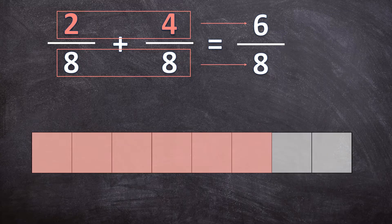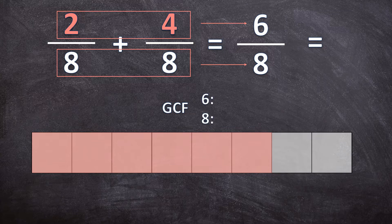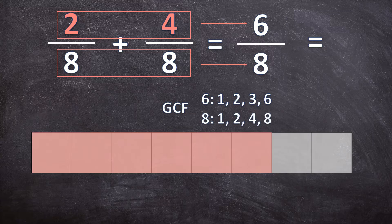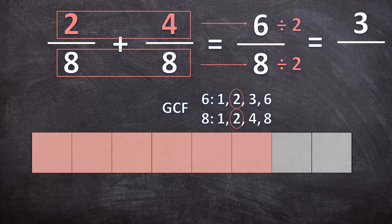So 2 over 8 plus 4 over 8 is 6 over 8. But this is not our final answer, because we can still simplify this fraction. We get the greatest common factor by finding the factors for the numerator and denominator. What can divide into 6? 1, 2, 3, and 6. What can divide into 8? 1, 2, 4, and 8. The biggest factor they both have is 2. So we divide the numerator and denominator by 2: 6 divided by 2 is 3, and 8 divided by 2 is 4. Our final simplified answer is 3 over 4.